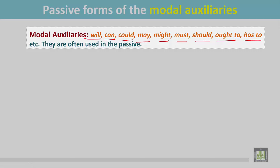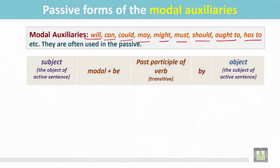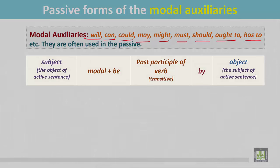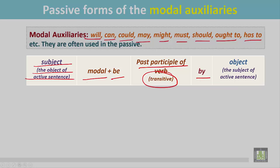They are often used in the passive. See the structure. The sentence begins with the subject, which is the object of the active sentence, then modal plus be. The verb is in the past participle form, followed by the preposition and the object, which is the subject of the active sentence.